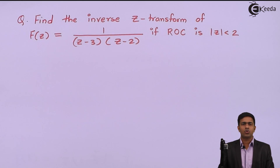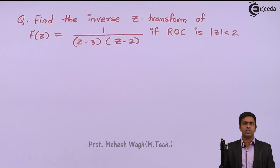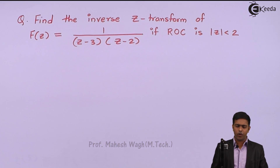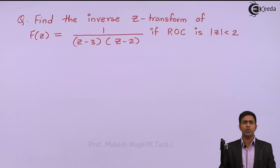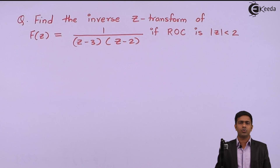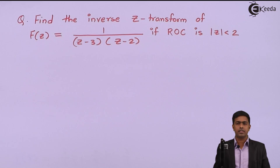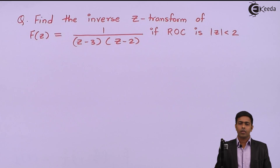Hello friends. In this problem we have to find out the inverse Z-transform of f(z) = 1 / [(z-3)(z-2)], given that the region of convergence is |z| < 2.